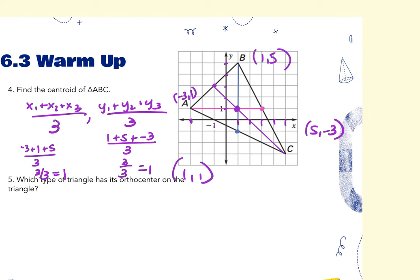It says: which type of triangle has its orthocenter on the triangle? A right triangle. The orthocenter is the point of concurrency of the altitudes. On a right triangle, the altitudes meet on the triangle — more specifically, at the right angle. So your quiz could ask you to find where the orthocenter meets, and if it's a right triangle, it's going to be at the right angle.